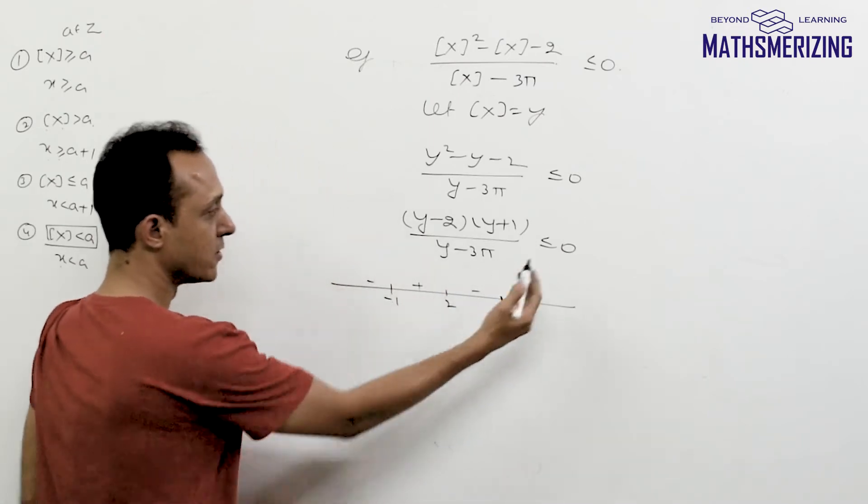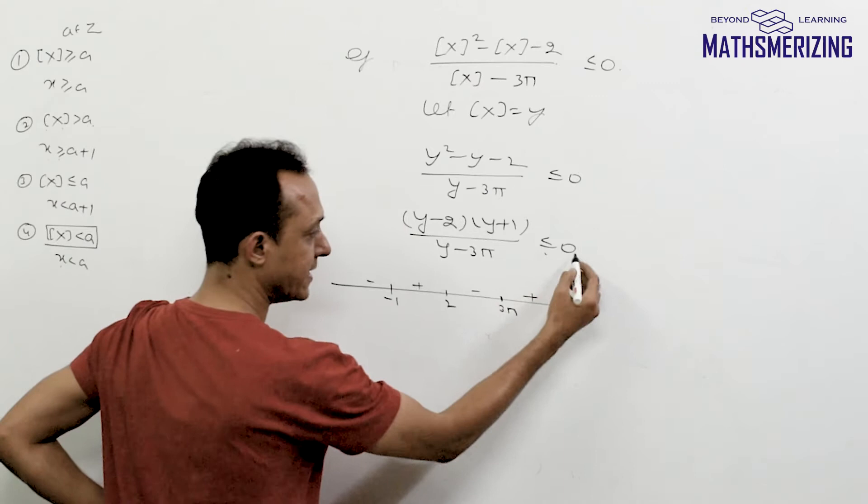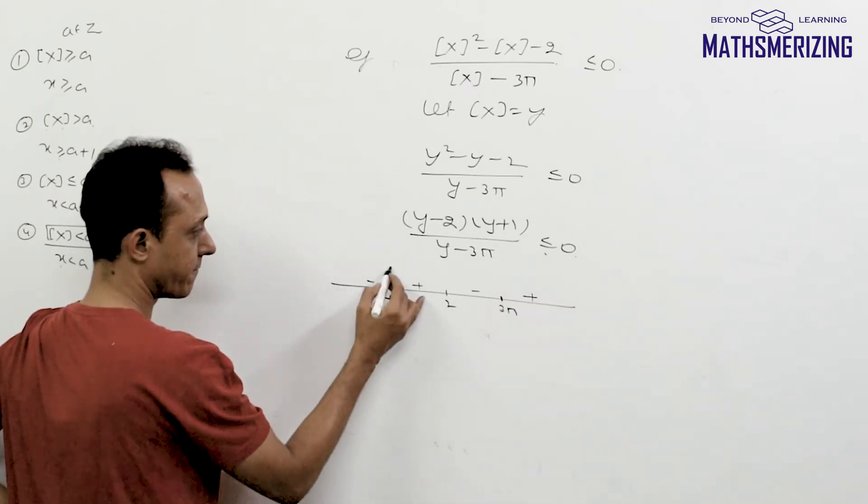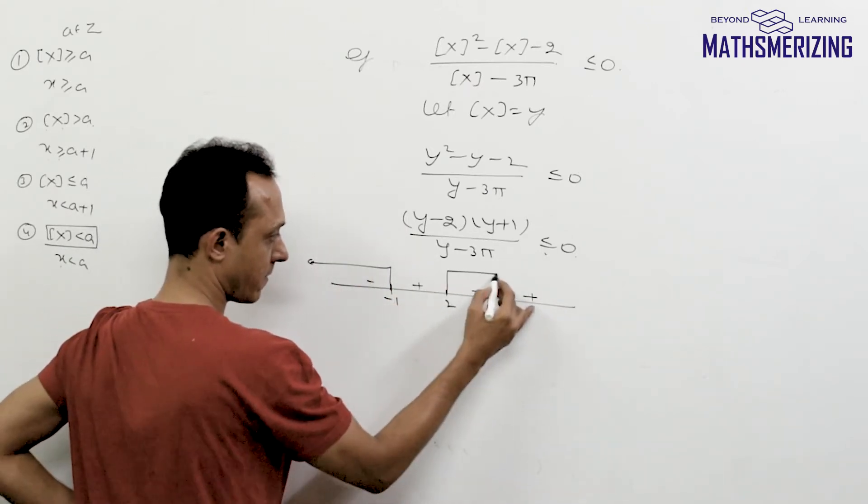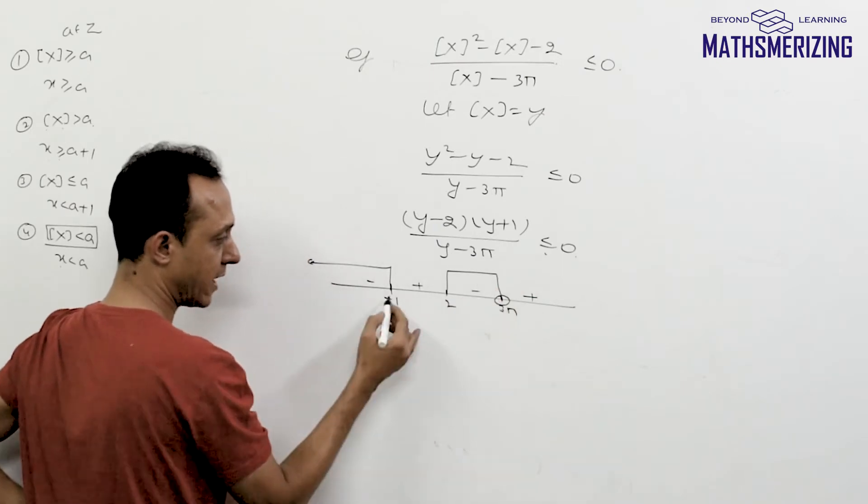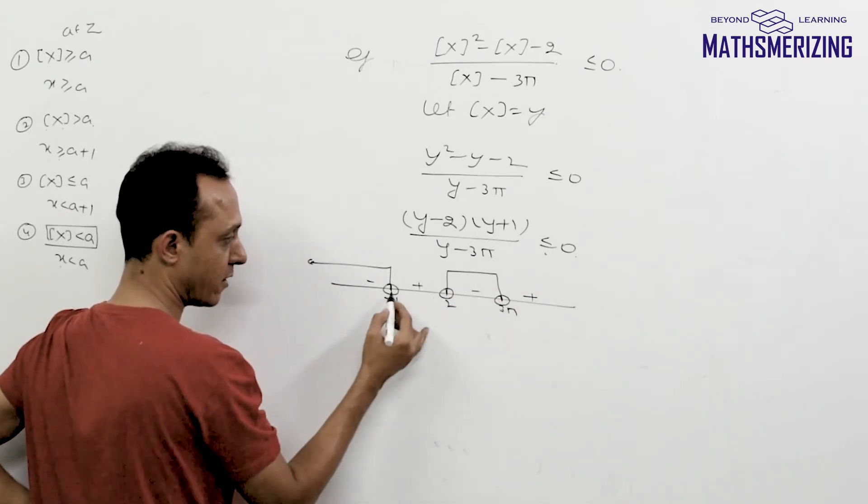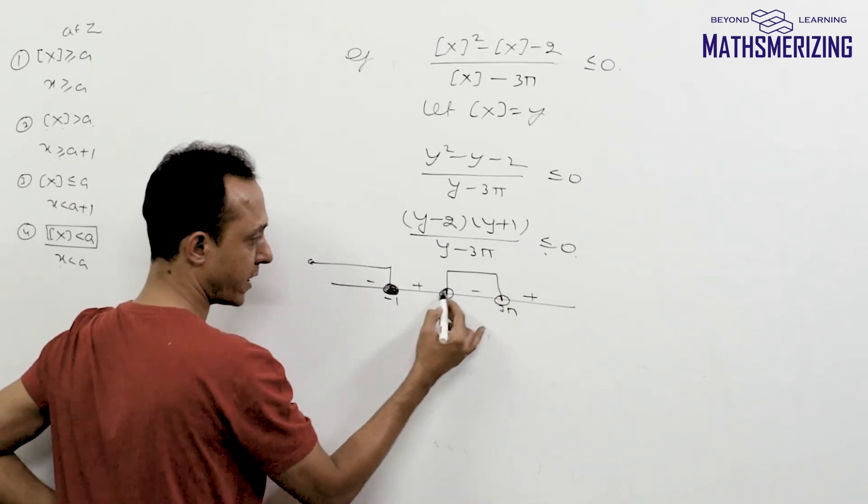So I can write it as I need what less than 0. Less than 0 is negative. Now because 3π lies in the denominator I will not include it and I'll include minus 1 and 2.